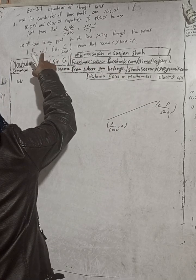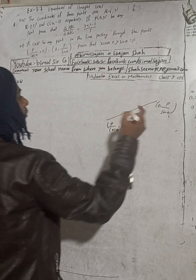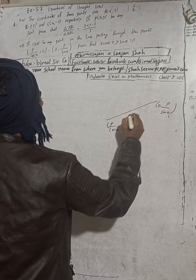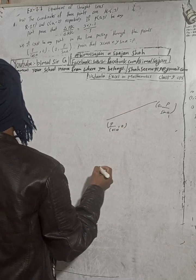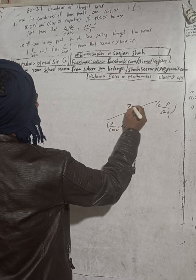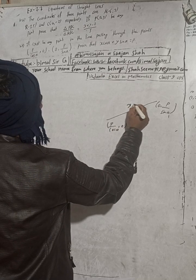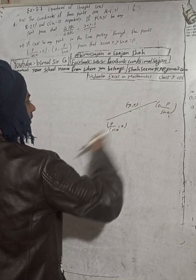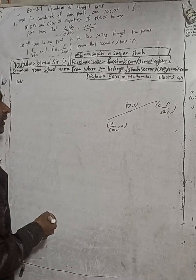Suppose the line is here, and the point (x, y) is anywhere on this line. All three points — (x, y), (P/cosα, 0), and (0, P/sinα) — lie on the same line.